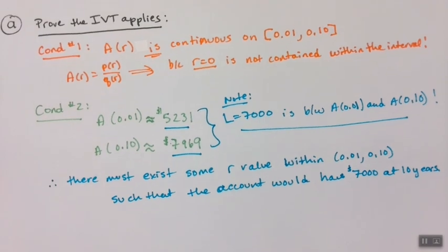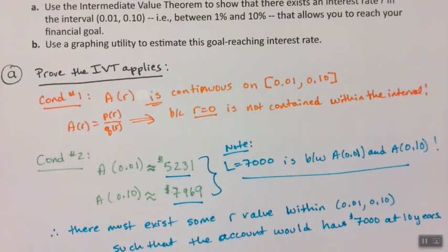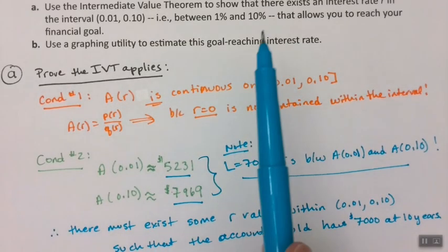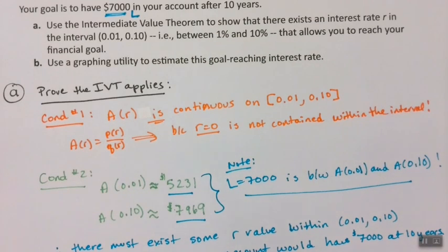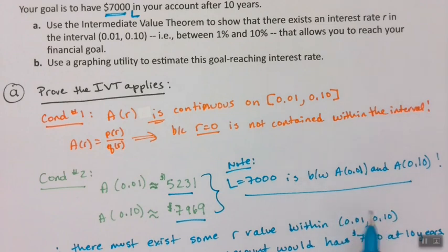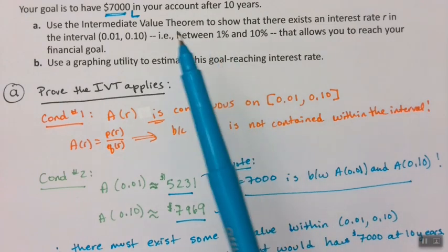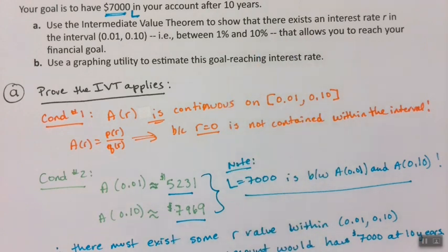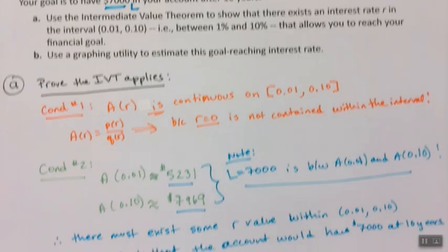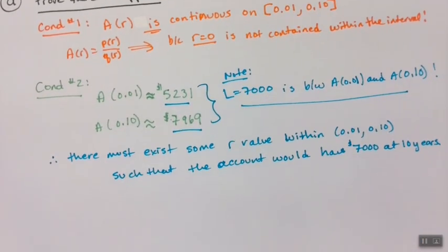Part A is done. I used the Intermediate Value Theorem and showed that there must exist an interest rate in the open interval (0.01, 0.10) that allows us to reach the financial goal of $7,000 at 10 years.